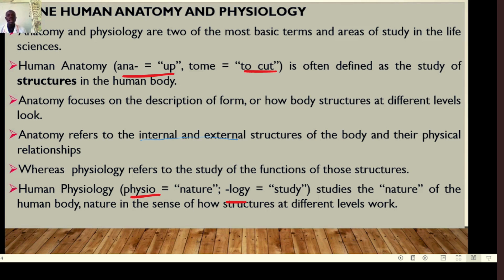Human anatomy comes from two words: 'anat' and 'tomy.' 'Anat' denotes 'up' and 'tom' means 'to cut.' So it is often loosely defined as the study of structures in the human body. Anatomy focuses on the description of form — how structures at different levels look. We can generally define anatomy as referring to the internal and external structures of the body and their physical relationships.